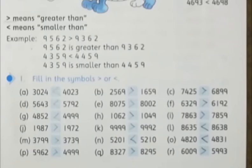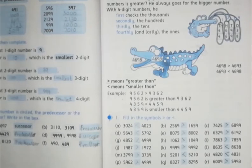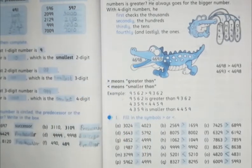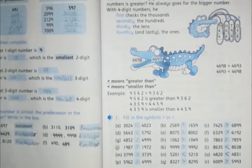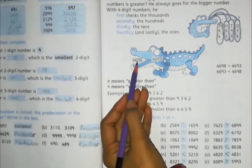The easiest way — I am going to tell you a trick. Always think of a crocodile. The crocodile is always hungry and wants to eat the bigger number — he always goes for the bigger number. Whichever will always be the big number, you will need to put the open side of the mouth toward it. You can see that there is a bigger number, so we open the mouth toward the bigger number.